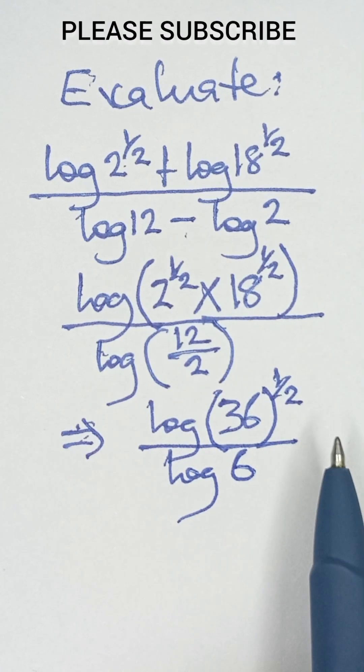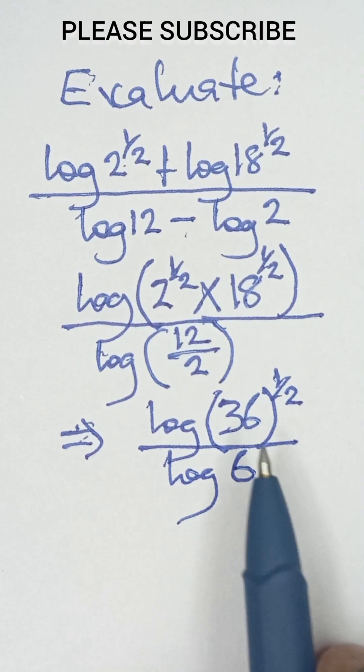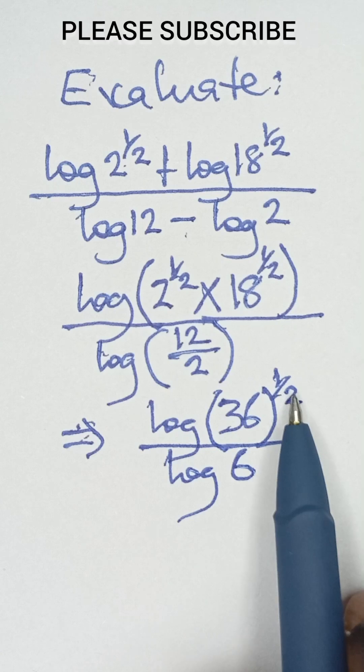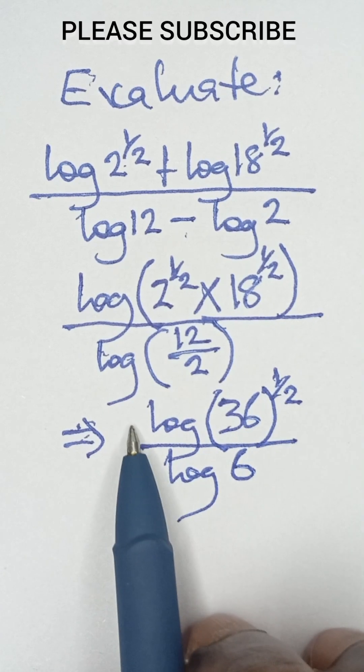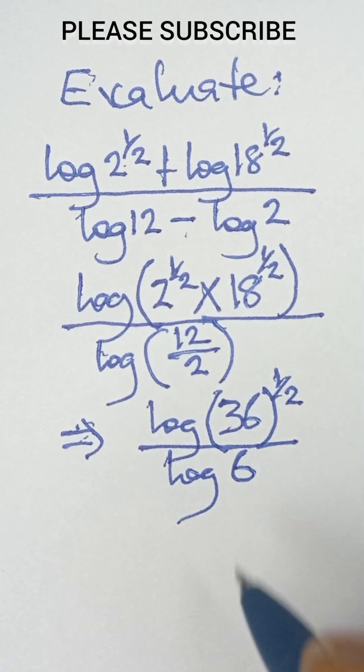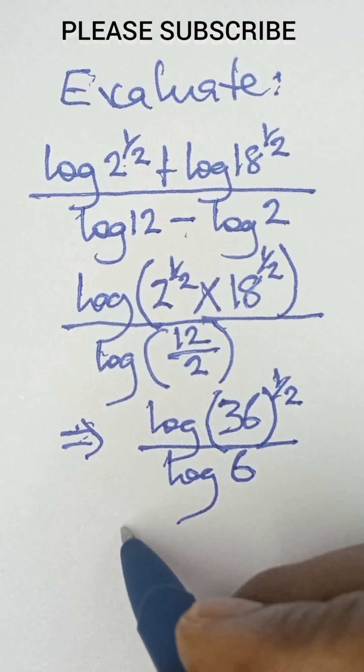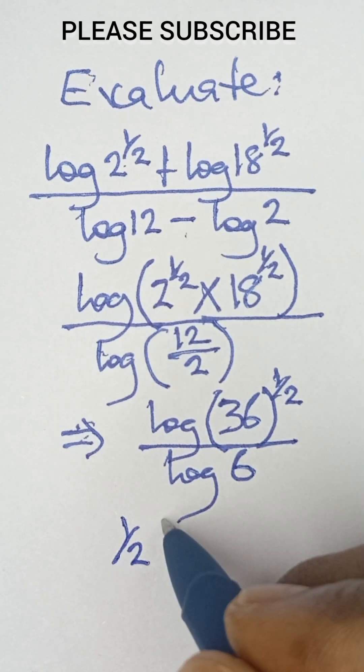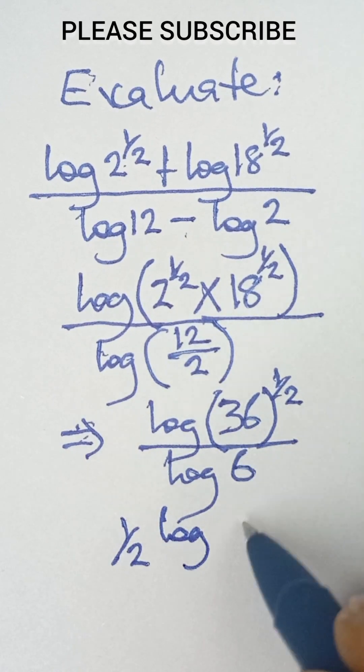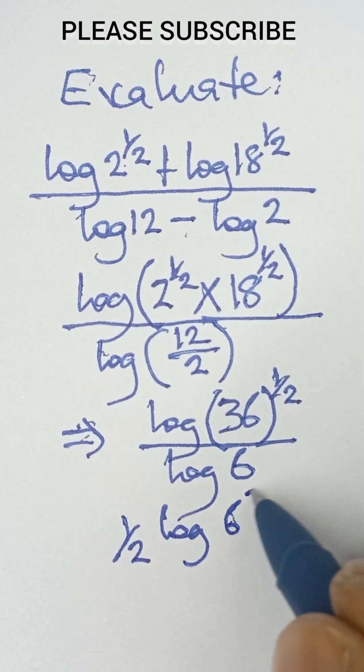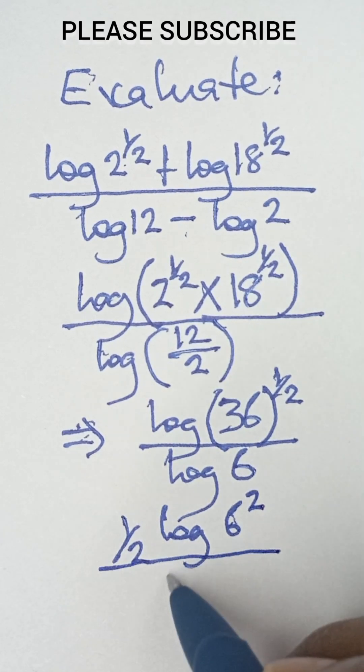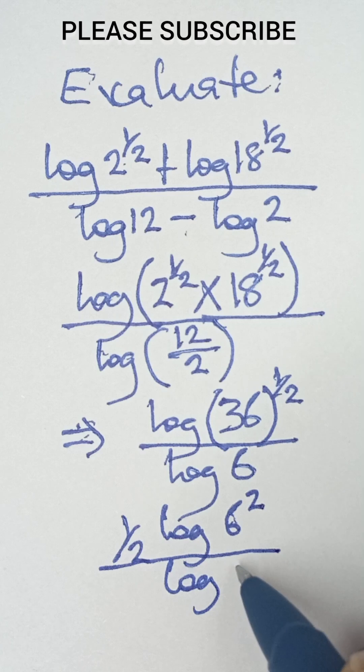So now, according to logarithm, when you have half like this, you can bring that as the power, you can bring it to multiply the logarithm. So that means this can become half multiplied by log 36 is changing as 6 squared. And then all divided by log 6.